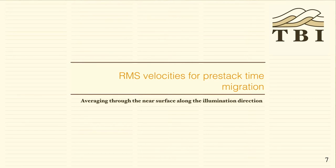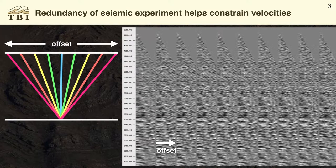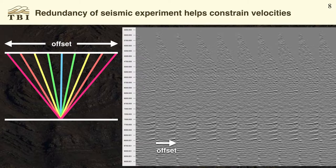For pre-stack time migration, RMS velocities average through various near-surface effects along an illumination direction, and it's the redundancy of the seismic experiment that helps us constrain these velocities. When we shoot surface seismic data and try to image a point in the subsurface, the blue ray path represents a very near offset, the green ray path a slightly longer source-receiver distance, and the red represents our maximum offset. Ray path lengths get longer, so any velocity errors are much greater on the long offsets than the near offsets — we rely on this redundancy to constrain the velocities.